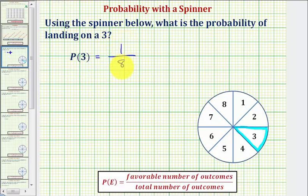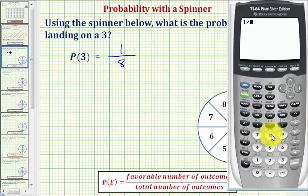Probability can also be expressed as a decimal and percentage. Let's also show those. To convert a fraction to a decimal, we divide. One divided by eight is equal to zero point one two five, or one hundred twenty-five thousandths.